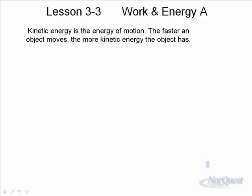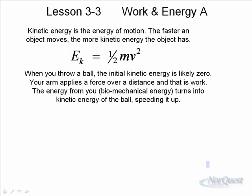Looking a little more closely at kinetic energy, it's the energy of motion. The faster an object moves, the more kinetic energy it has. We say the formula for kinetic energy is one-half mv squared. When you throw a ball, the initial kinetic energy, as you reach your hand back and get ready to throw it, the ball is stationary in your hand. Then you apply a force over a distance.